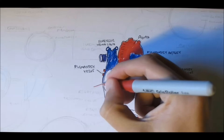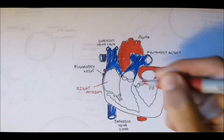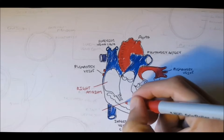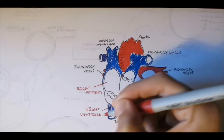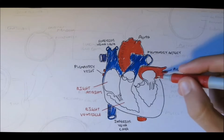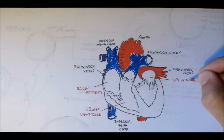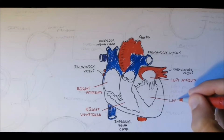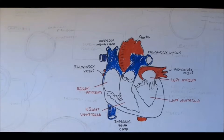Now let's learn about the chambers. De-oxygenated blood comes through the superior vena cava and inferior vena cava to the right atrium, then down to the right ventricle, pumped up through the pulmonary arteries towards the lungs. From the lungs, it comes back through the pulmonary veins to the left atrium, to the left ventricle, and then is pumped back up through the aorta towards the whole body.